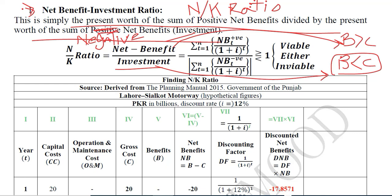Their values are written in summation form — summation from year 1 up to whichever years have positive net benefits, and separately the years with negative net benefits. Both are discounted and their ratio is taken. A ratio is compared with 1, because we want to see whether the numerator or the denominator is greater.